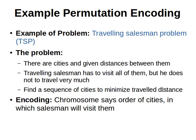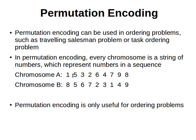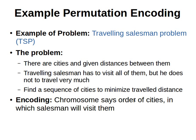For example, with nine cities we might start at city 1, then go to city 5, 3, 2, 6, 4, 7, 9, 8. Or another sequence might start at city 8, then go to 5, and so on. Between each city there is a cost and a distance, and the goal is to find the sequence that minimizes that total distance. The chromosome represents the order in which the traveling salesman visits the cities.